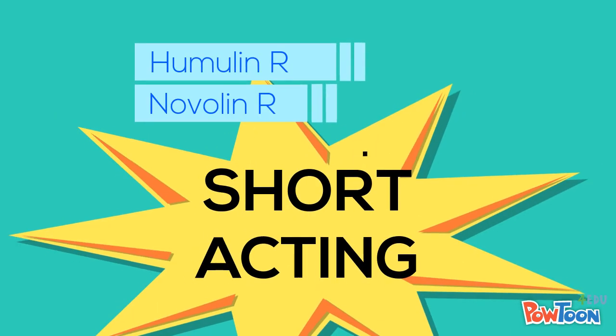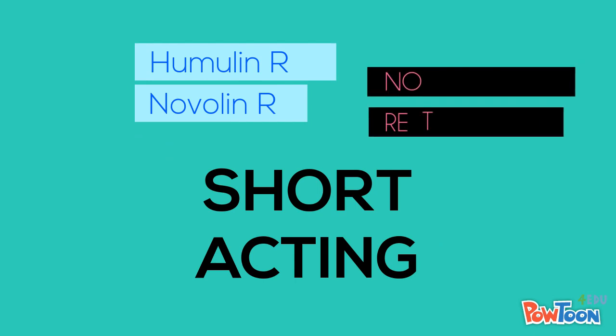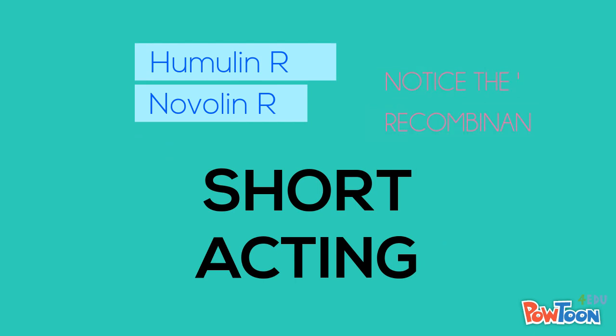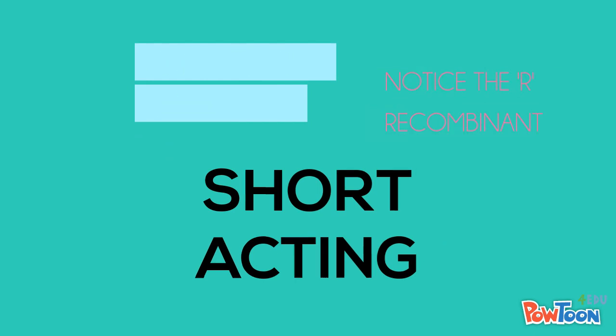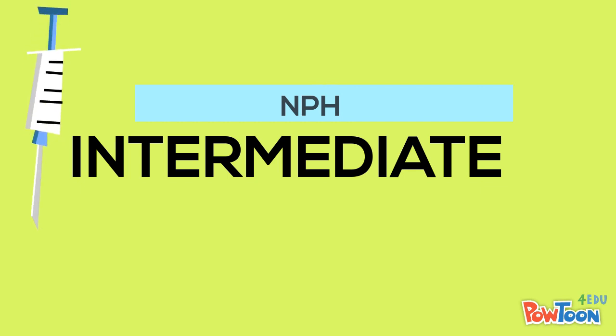The next thing we have is short acting insulin: Humulin and Novolin R. You can remember this is short acting because it has 'R,' which stands for recombinant insulin, which means it was grown on bacteria. It's for humans though, so don't worry.